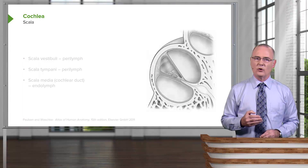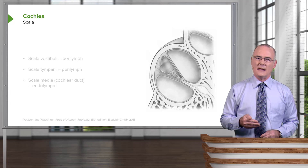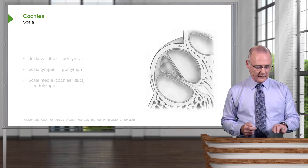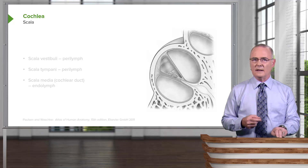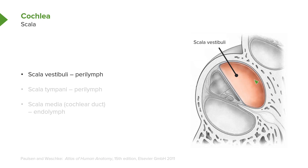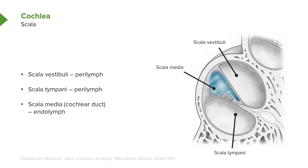If we take a cross section through the osseous and membranous labyrinth, this is the profile we will see. In that profile, we will have three scala. Here is the scala vestibuli, and here is the outer portion of the osseous labyrinth. On the opposite side we have the scala tympani, and between the scala vestibuli and the scala tympani we have the scala media.